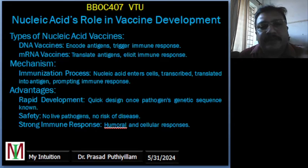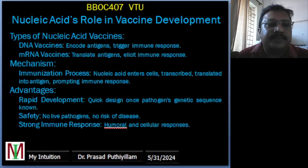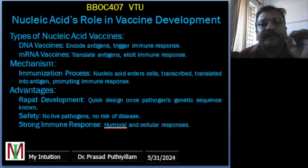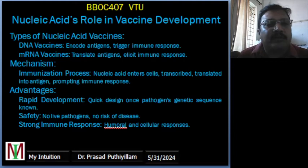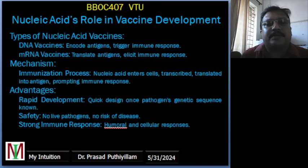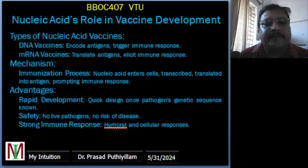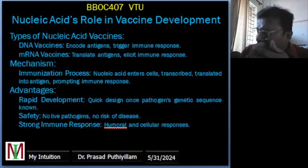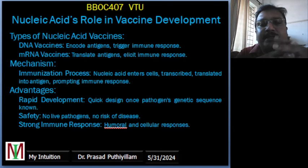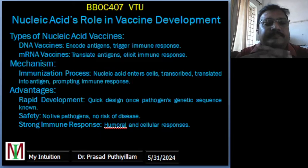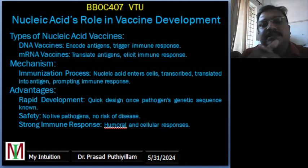The advantages of nucleic acid vaccines include rapid development — these vaccines can be quickly designed and produced once the pathogen's genetic sequence is known. For example, COVID-19 vaccines were developed within a year of the virus being sequenced. Since they do not use live pathogens, there is no risk of causing the disease. They also elicit both humoral (antibody-mediated) and cellular (T-cell-mediated) immune responses, leading to high efficacy rates in preventing infection such as COVID-19.